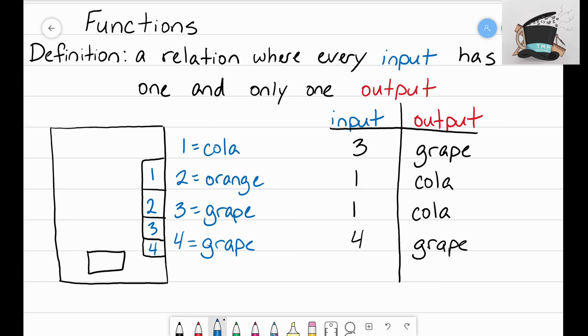You might be thinking, well there's two outputs for grape and they have different inputs, and I thought that only one input could only have one output. And that's true, every input has one and only one output.